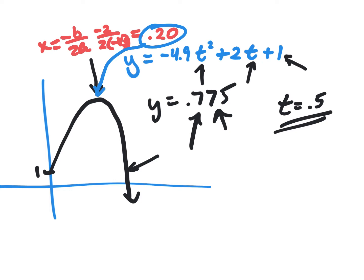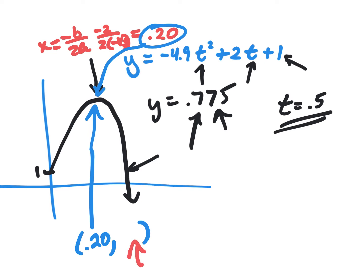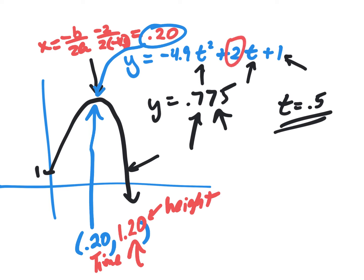Now everybody figure out the other part of the vertex. We know the vertex is at 0.2 of a second — very quickly it reaches its peak. What's the other part of the vertex? You should have gotten 1.20. So that is the time, and this is the height — it only went up to just 1.2 meters. It didn't go up very high because 2 meters per second is a really weak throw.